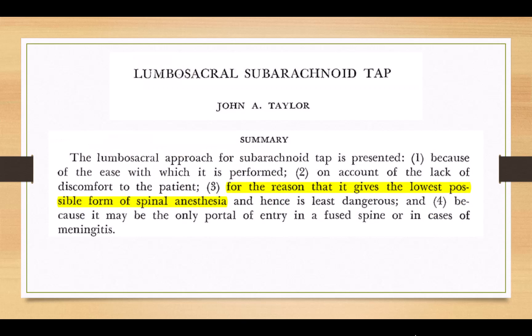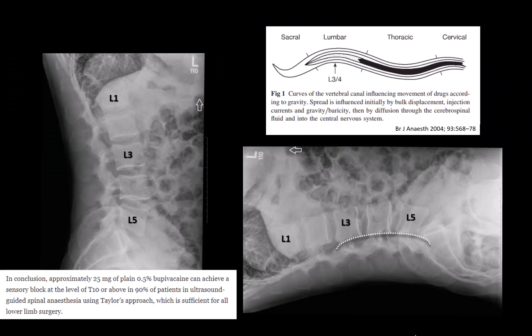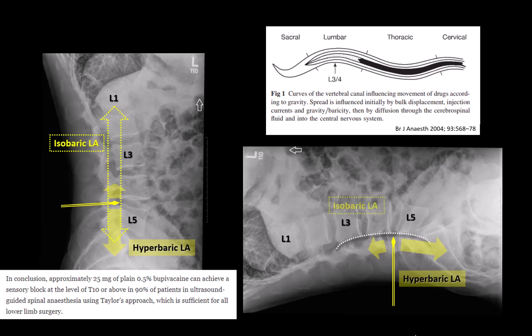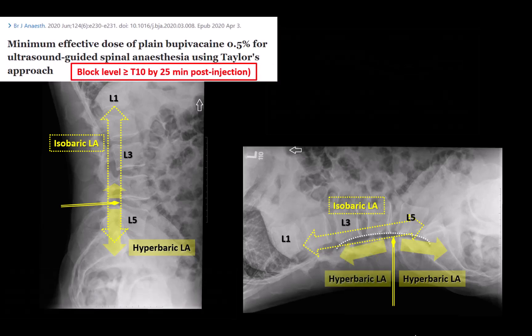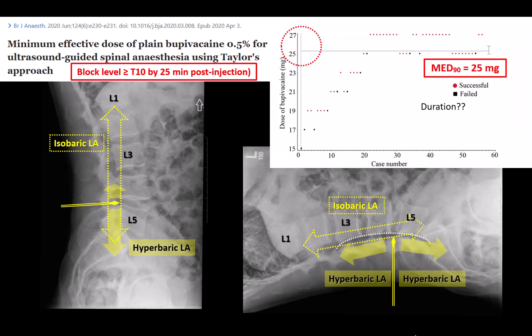However, the main issue with targeting the L5-S1 space, in my experience, is achieving sufficient block height for surgery of the L1 territory and higher. In Taylor's paper, he actually cites this restricted height of the block as an advantage in terms of greater hemodynamic stability. If you use a hyperbaric solution at L5-S1, injection is occurring inferior to the apex of the lumbar lordosis, with a risk of predominantly sacral root anesthesia. If you use plain isobaric solutions, there's a pretty even chance that you won't get a high enough block for hip surgery with conventional doses. An insufficient block height is a common cause of secondary spinal anesthetic failure. This has been proven in a dose-finding study from 2020, which found that to achieve a T10 block within 25 minutes, the 90% minimum effective dose of 0.5% bupivacaine was 25 mg — 5 ml of local anesthetic — and all of the doses under 17 mg failed.